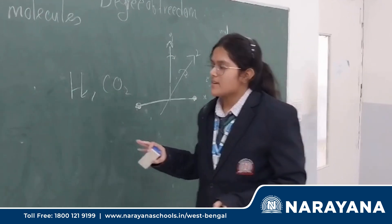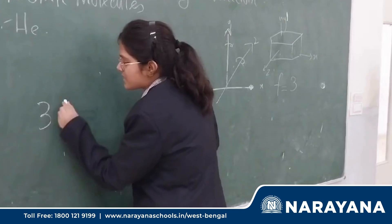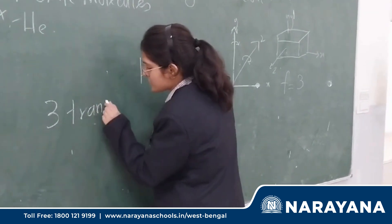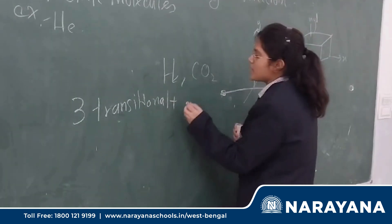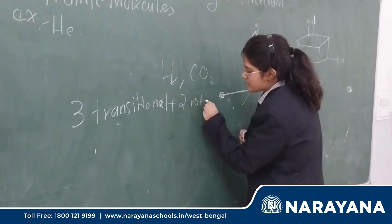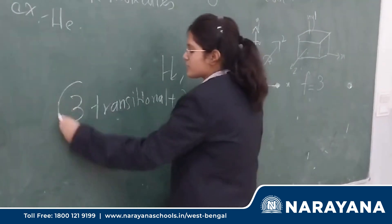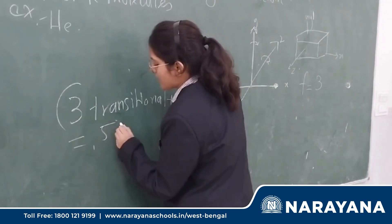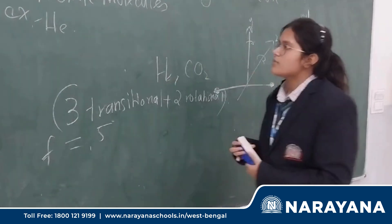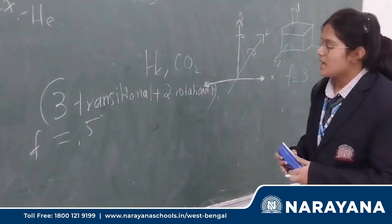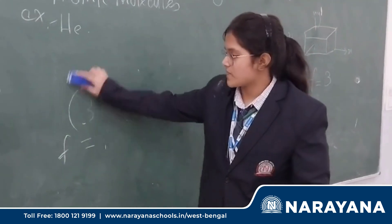So for a diatomic molecule, the degree of freedom is: three translational motions plus two rotational motions, which gives F equals five. This is the degree of freedom for diatomic molecules at normal room temperature.